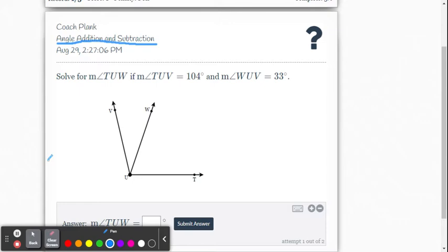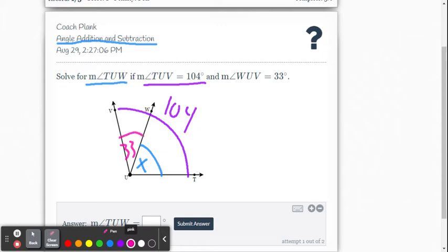The first problem asks us to solve for the measure of angle TUW. So angle TUW is this angle here, we're going to call that x. It tells us the measure of angle TUV is 104, that's the large angle. It also tells us that angle WUV, that's the small angle here, is 33 degrees.